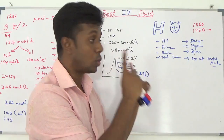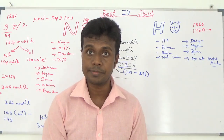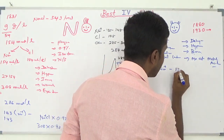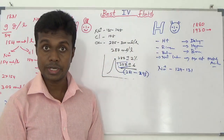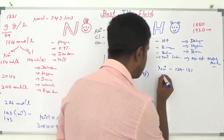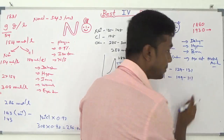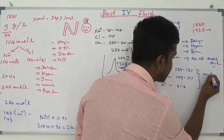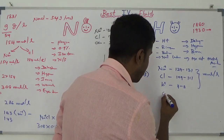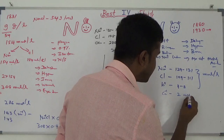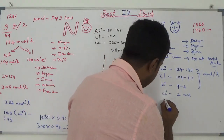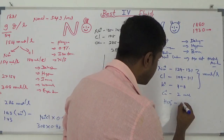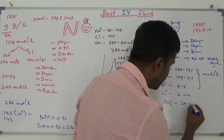When coming to Hartmann solution, Hartmann proudly says: my sodium content is roughly 129 to 131, my chloride is 109 to 111, my potassium is 4 to 5 millimoles per litre, my calcium is 2 millimoles per litre, and my bicarbonate — or lactate — is roughly about 28 to 29 millimoles per litre.